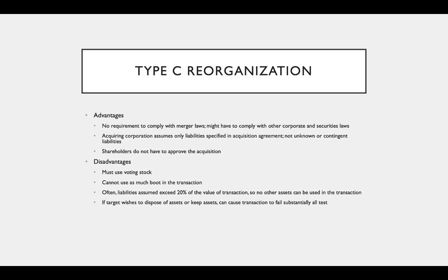We like Type C reorganizations because there's no requirement to comply with merger laws, though you may still need to comply with other corporate and securities laws. The acquiring corporation assumes only liabilities specified in the acquisition agreement, not those that are unknown or contingent — that's different from Type A. Shareholders don't have to approve it, so it can be easier to execute. Disadvantages are that you have to use voting stock (in Type A you didn't), you can't use as much boot — in Type A only 40% stock was required, here it's at least 80% — and often liabilities assumed will exceed 20% of the value, so no other assets can be used.